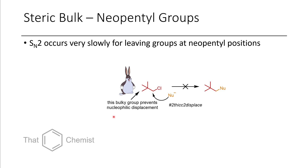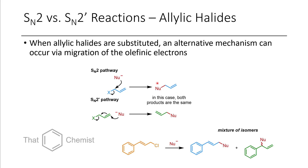Another consideration for SN2 reactions is whether or not the leaving group is neopentyl. A neopentyl group is when you have a tert-butyl group before a primary or secondary position with a halide. Even though you might think this is still a primary position that we should be able to displace easily, it actually isn't the case due to steric bulk.